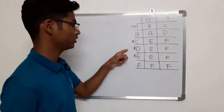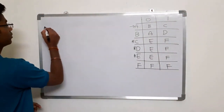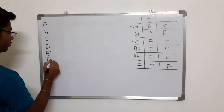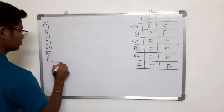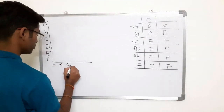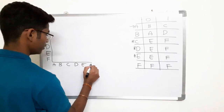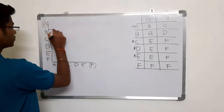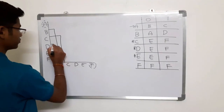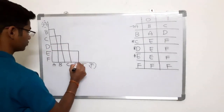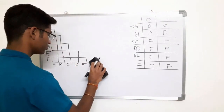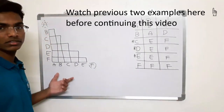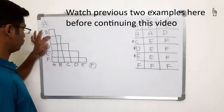We have six states A, B, C, D, E, and F. Let us draw the table with these states on both axes — A, B, C, D, E, F — and draw it like this. Ignore the first one and the last one and draw the table as we have done in the previous examples.